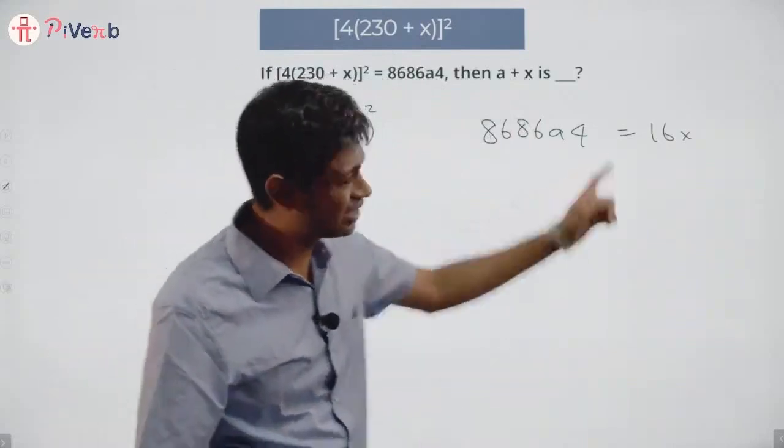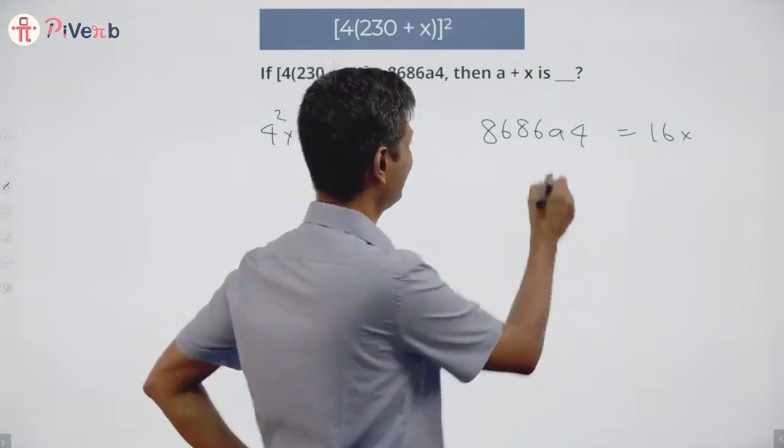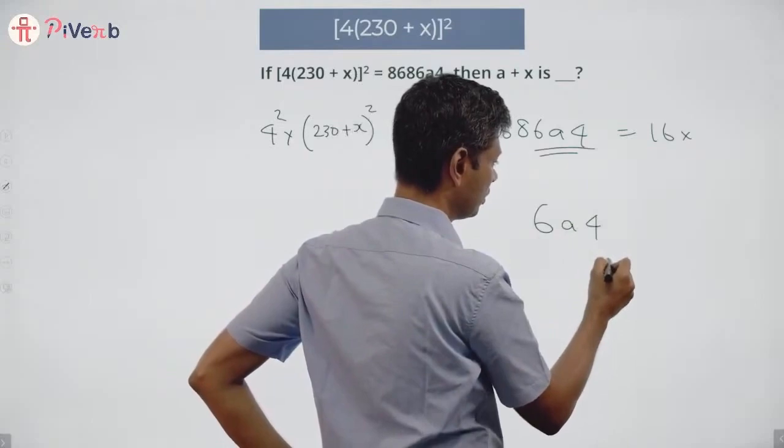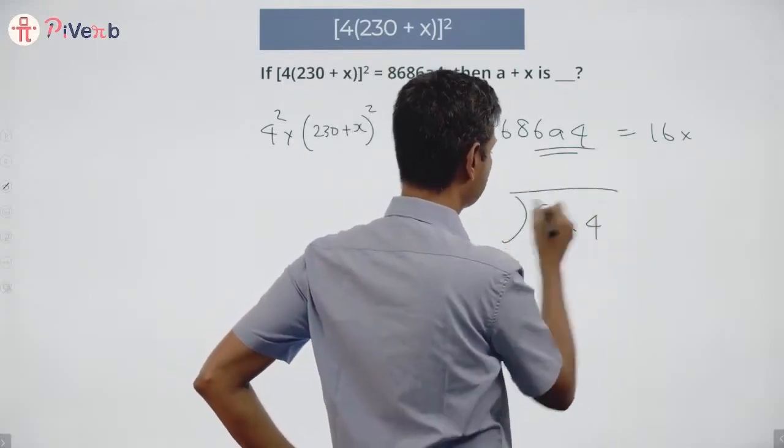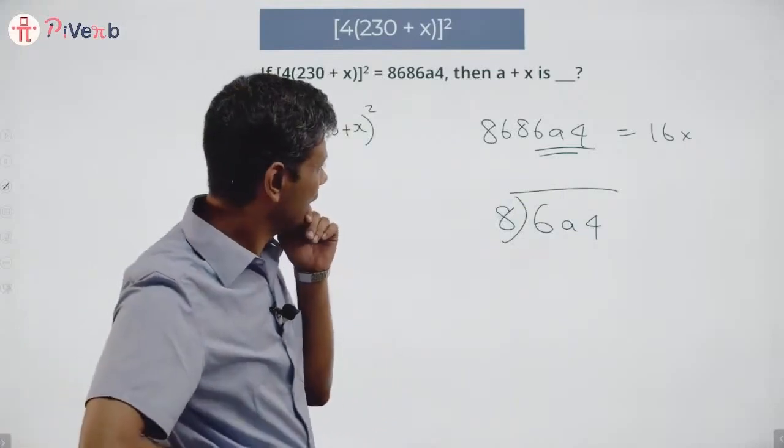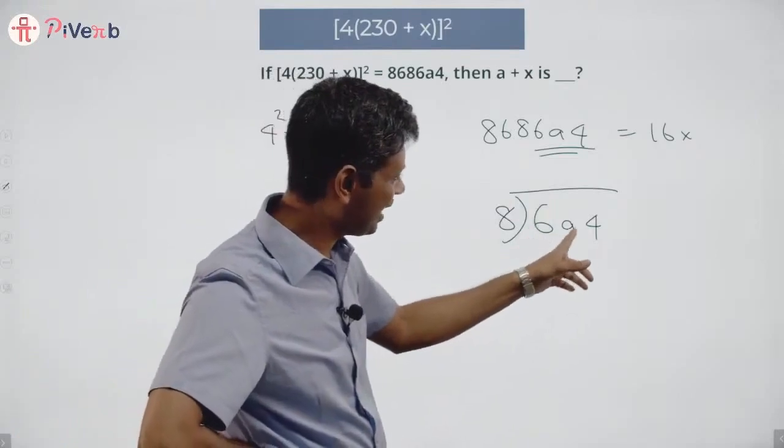It's a multiple of 16, it is definitely a multiple of 8. I know this number 6a4 is a multiple of 8. If I multiply this number by something I should get 6a4.